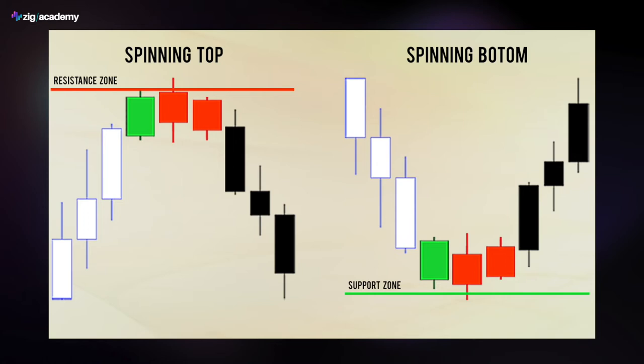Waiting for a confirmation signal would be wise, but still they can helpfully determine support and resistance in general before that price action confirmation. You must take into consideration that these two formations can also mark consolidation before the next move in a trend. We can have some consolidation and we don't have to observe a reversal here — there could be a continuation of an uptrend in the case of spinning top. A trend may continue upwards or downwards after a while, but that will most probably mark a significant support and resistance level.